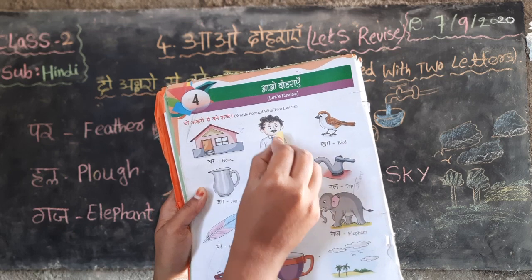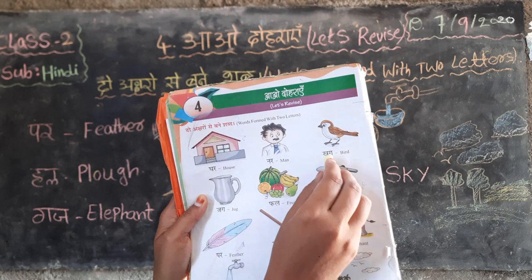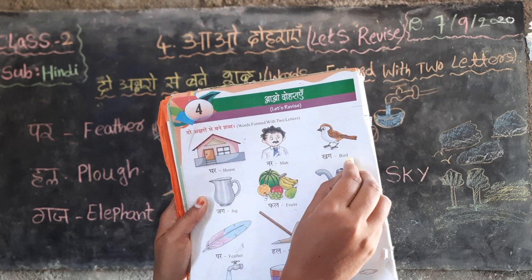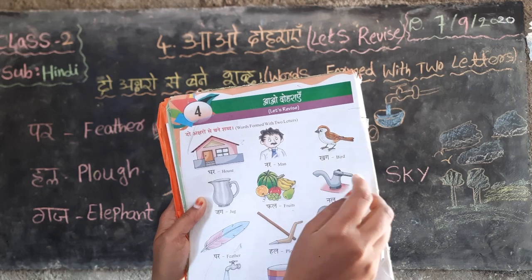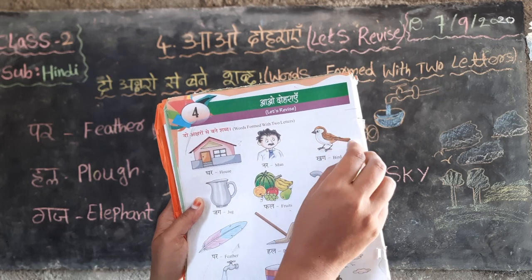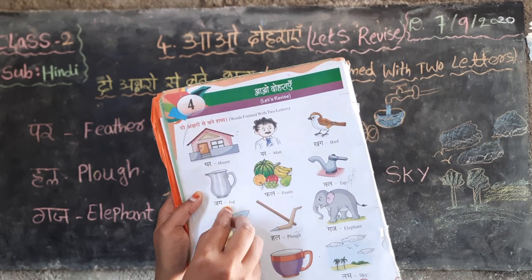Nar means man, manishi. Khag — bird, sparrow, birds. Some of birds.